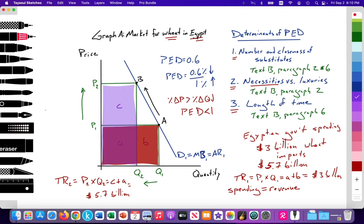So again, it follows that the PED is less than 1 because when the PED is less than 1, there's a direct relationship between price and total revenue. As price rises for wheat, total revenue for the firms exporting and selling wheat increases, which we see here. Firms that used to make $3 billion in their wheat exports to Egypt are almost doubling their revenues to $5.7 billion. Egyptian government spending is equal to their revenue.